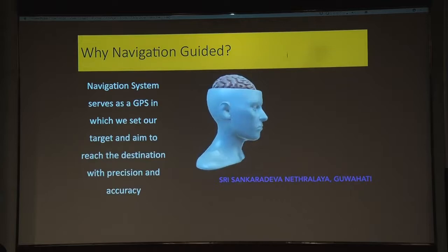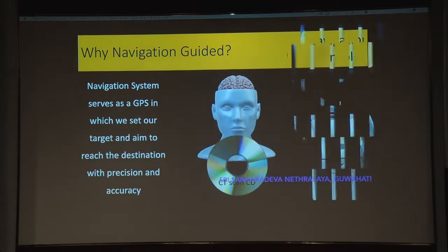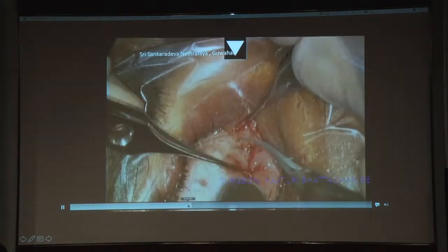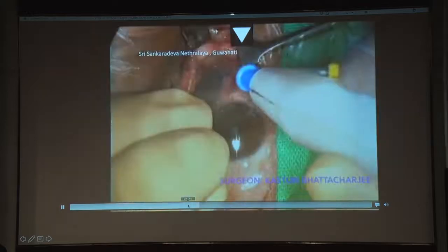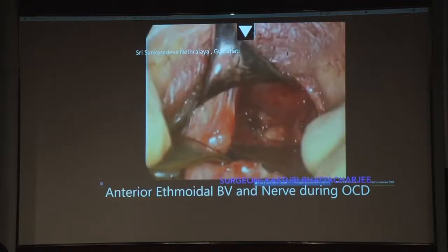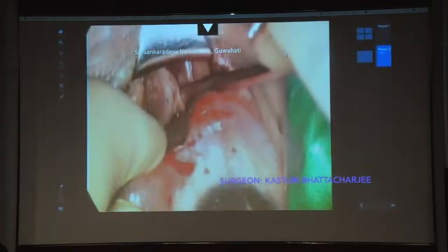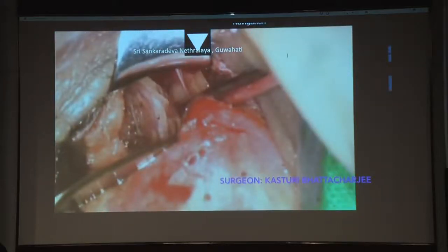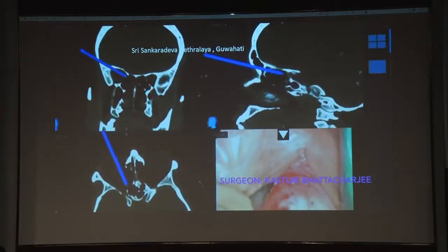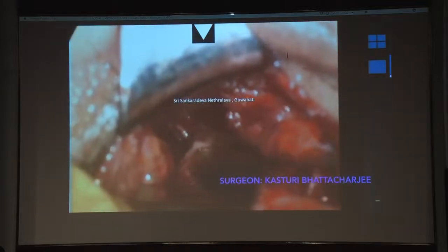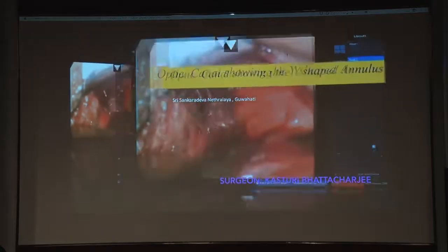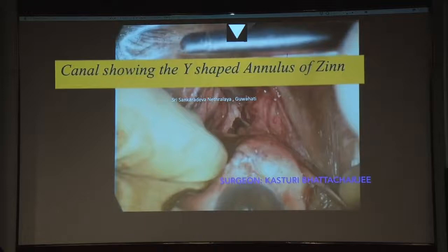We give a small incision in the medial caruncle and directly approach the optic canal using navigation — very minimally invasive. The rule of 24-12-6: go 24 mm to find the anterior ethmoidal blood vessel and cauterize it; go another 12 mm to find the posterior ethmoidal blood vessel, which you do not cauterize because only 6 mm behind it is the optic canal. The navigation stylet confirms position at the posterior ethmoidal point.